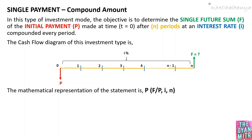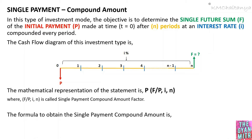The mathematical representation is: known value of P, unknown F, at interest rate i and n interest periods, where F/P, i, n is called the single payment compound amount factor. The formula to obtain the single payment compound amount is F equals P multiplied by 1 plus i all to the power of n, where the value of interest i is in terms of decimals.